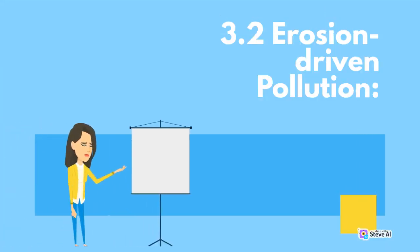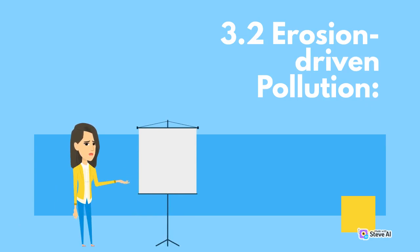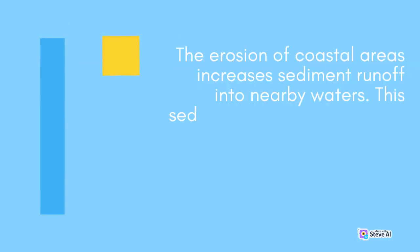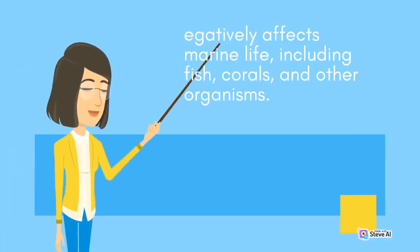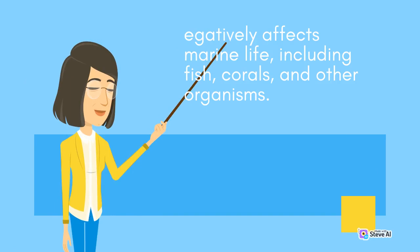3.2 Erosion-Driven Pollution. The erosion of coastal areas increases sediment runoff into nearby waters. This sediment contains pollutants, such as heavy metals and chemicals from human activities. The resulting water pollution negatively affects marine life, including fish, corals, and other organisms.